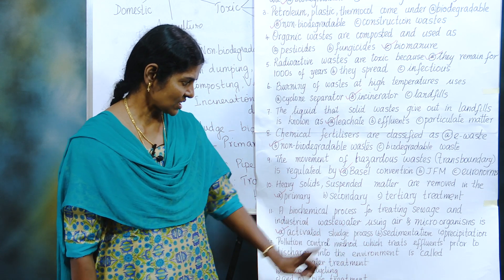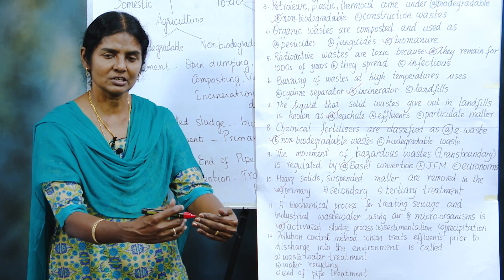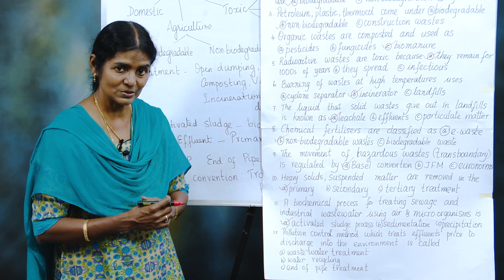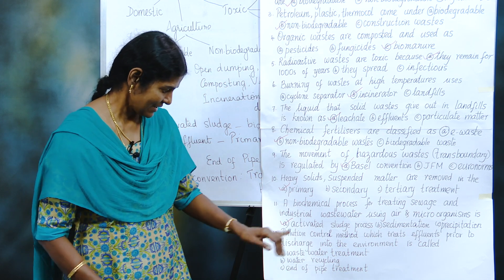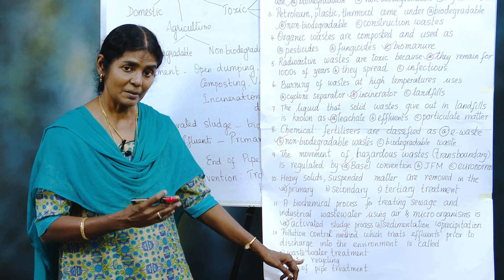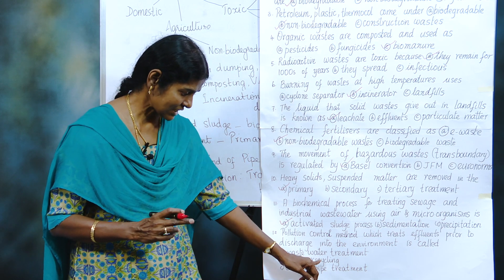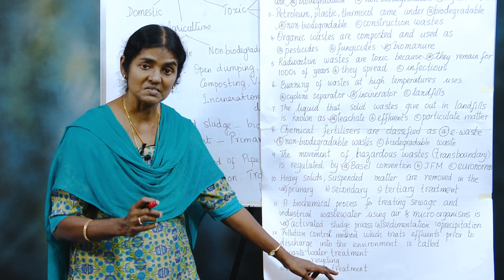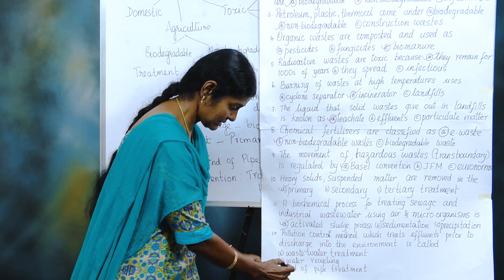Pollution control method which treats effluents prior to discharge into the environment — before it is discharged into the water bodies, what is the control method used? Is it wastewater treatment? Of course it is wastewater treatment. But what is happening specifically at the end? End of pipe treatment is the correct specific answer. You have to be careful while reading the question and select the correct answer.